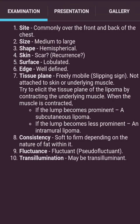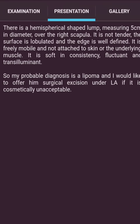Fluctuation — that is pseudo-fluctuation — and may be transilluminant. Presentation: There is a hemispherical separate lump measuring 5 cm in diameter over the right scapula. It is not tender. The surface is lobulated and the edge is well defined. It is freely mobile and not attached to skin or the underlying muscle. It is soft in consistency, with fluctuation and transillumination. My probable diagnosis is a lipoma, and I would like to offer surgical excision under local anesthesia if it is cosmetically unacceptable.